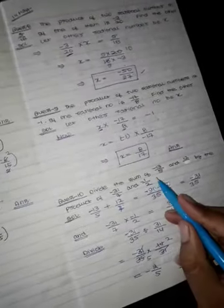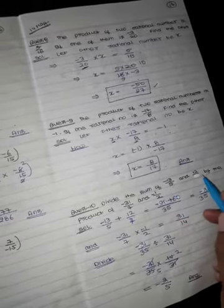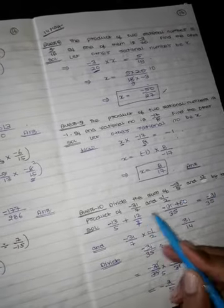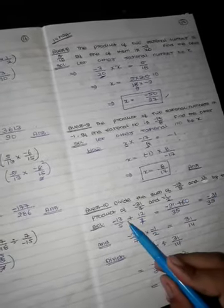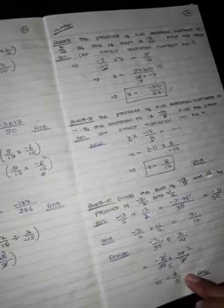Question number 10: divide the sum of minus 13 upon 5 and 12 by the product of minus 13 upon 7 and minus 8. What did we do? We sum these two, then we have the product to give us the answer. The answer is 2 upon 5.